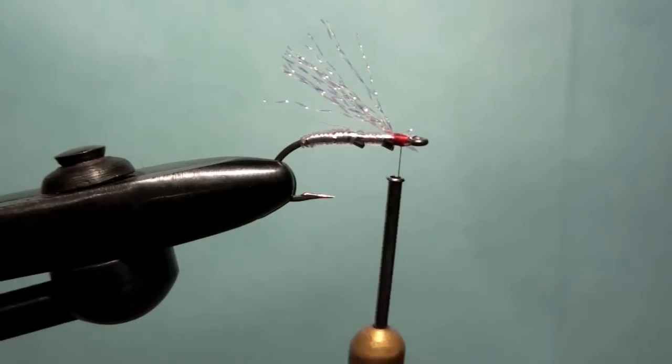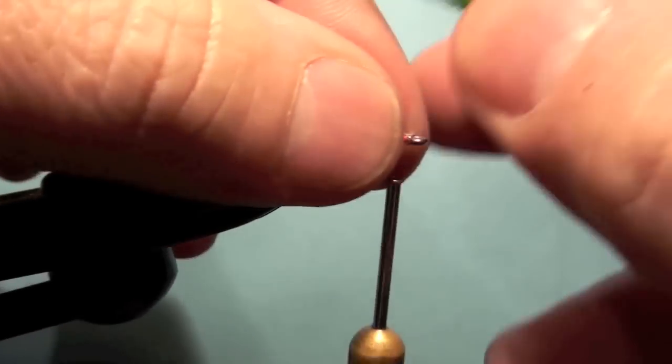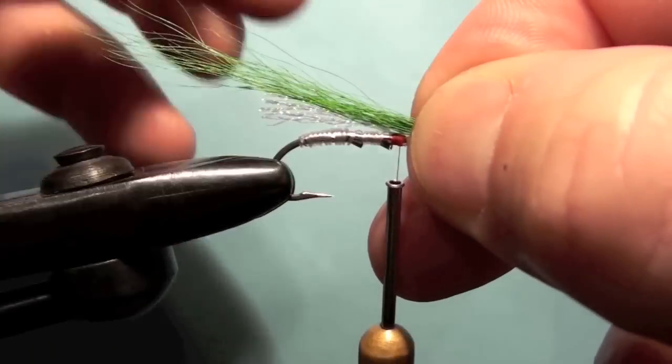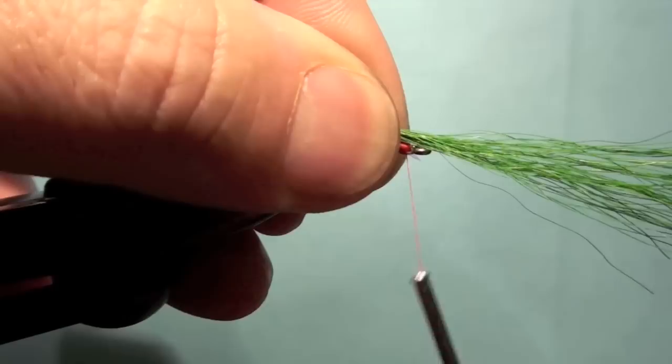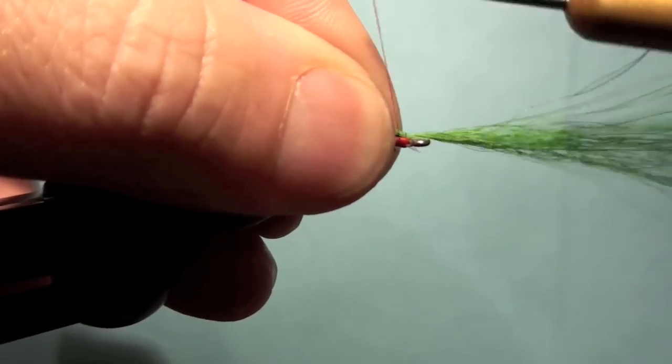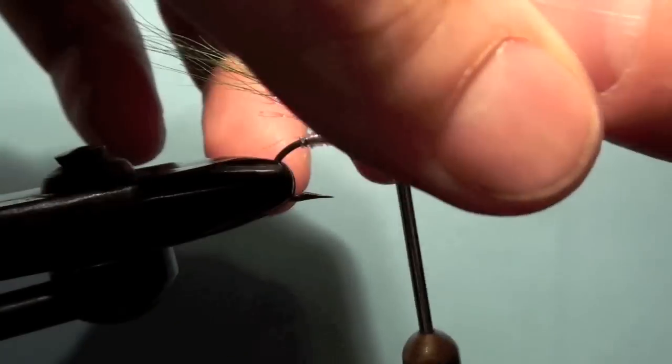The next thing we're going to tie in is some green bucktail. And we're going to lay that a little farther back than the pearl crystal flash. Maybe, I don't know, half an inch or so. Bind that in nice and tight. Leave that long. It's about right.